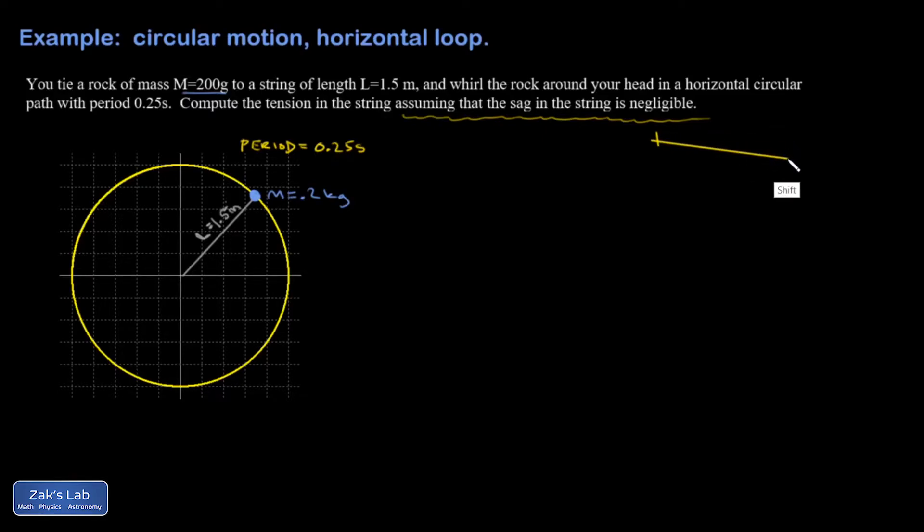And the reason is that gravity is always pulling down on this rock. So you absolutely have to have an upward force to balance the downward force of gravity. Otherwise, there's no way you're going to keep moving along on a horizontal circular path. So the key is you must have sag so that the upward component of the tension is going to cancel out the force of gravity.